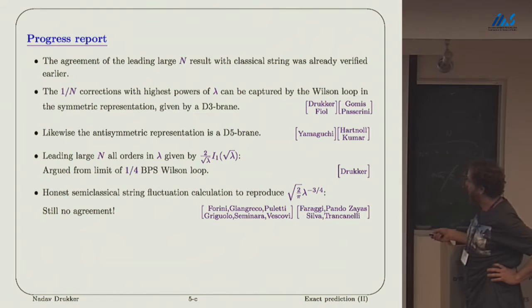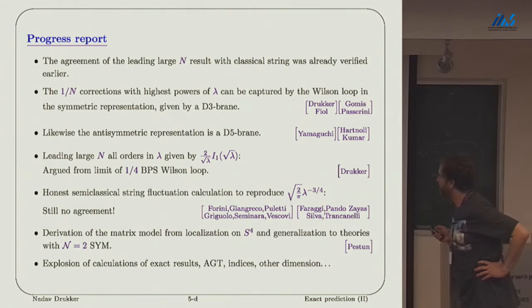Beyond the large leading order in lambda there is very little known. I have a not completely rigorous argument for this all order in lambda at the planar limit. But the honest calculation of it, there were still a couple of papers in the last two months that cannot reproduce the first correction, this coefficient here. Still a lot is left for string theory to reproduce.